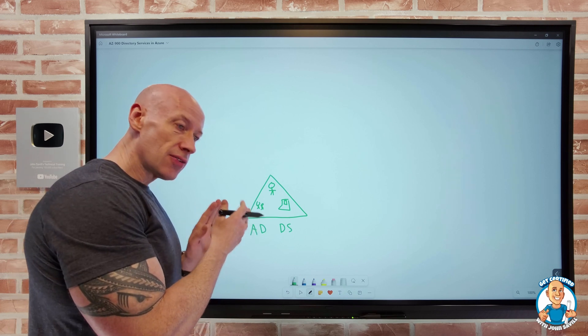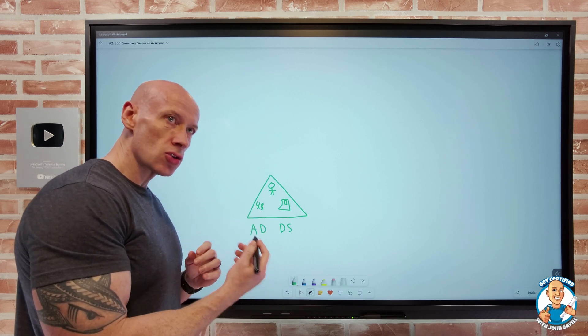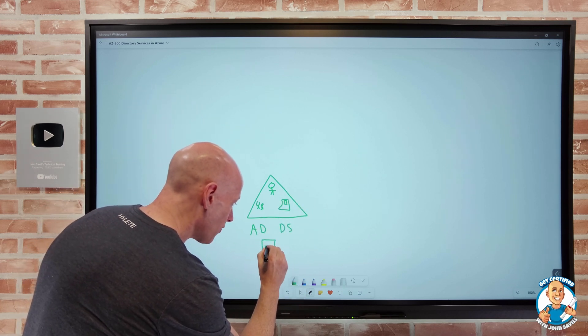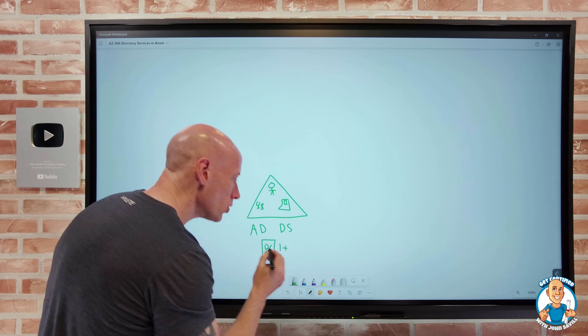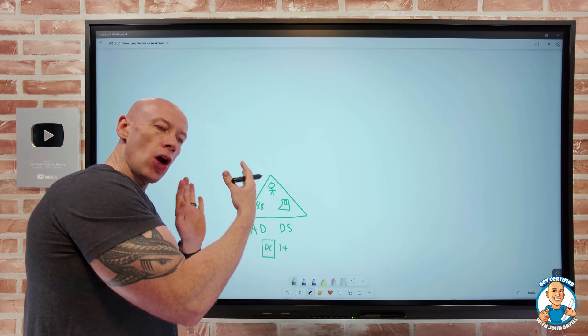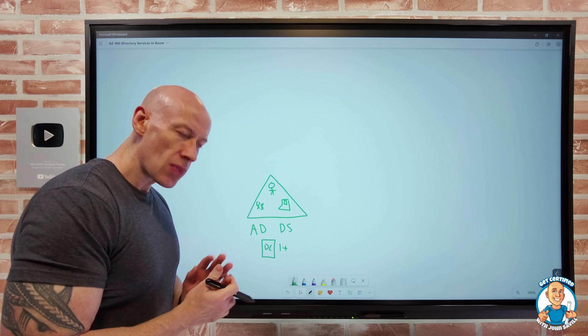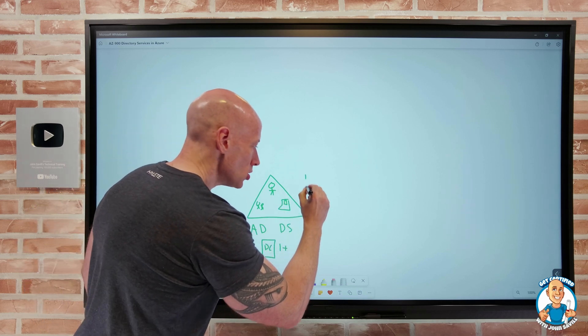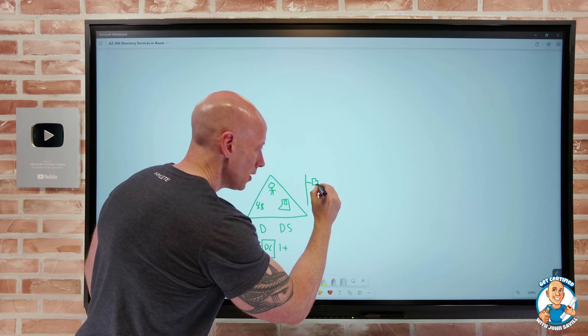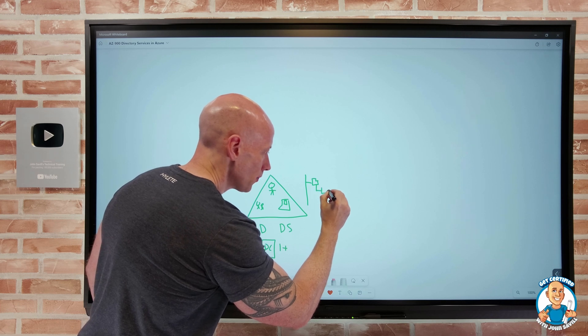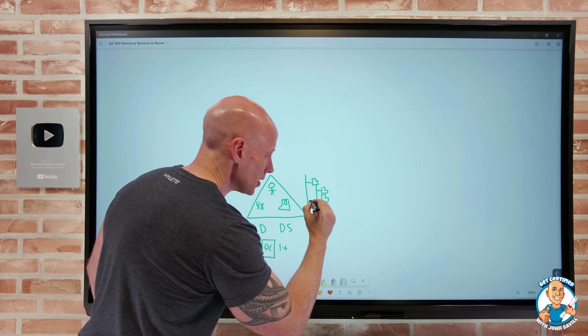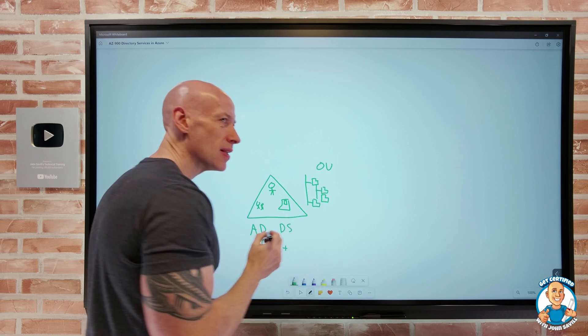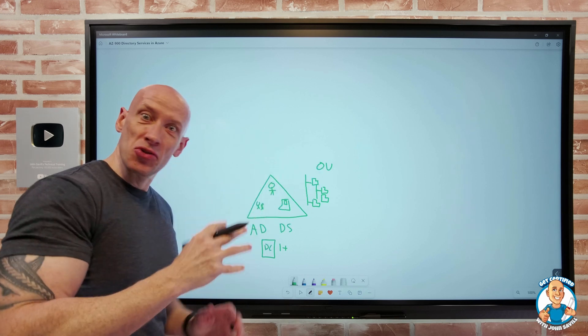Now, this Active Directory Domain Services instance was facilitated by domain controllers. So I would have normally at least two, but it was one or more domain controllers that hosted a particular Active Directory domain. And I could create a hierarchy into which I could place all these objects. So you would have a hierarchy, which I could have child. And these were called organizational units. So I could have this whole hierarchy configured of these OUs. This was based on the X.500 structure.